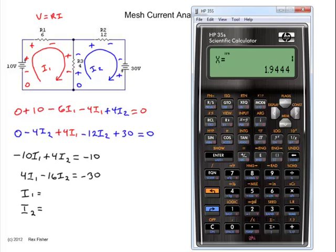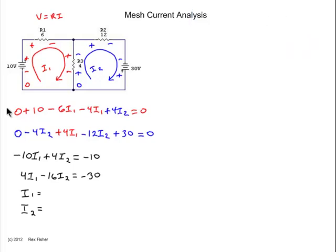The X is really I1, which is 1.944 amps. And Y, which is really I2, is 2.361 amps. So I1 is 1.944 amps. And I2 is 2.361 amps.